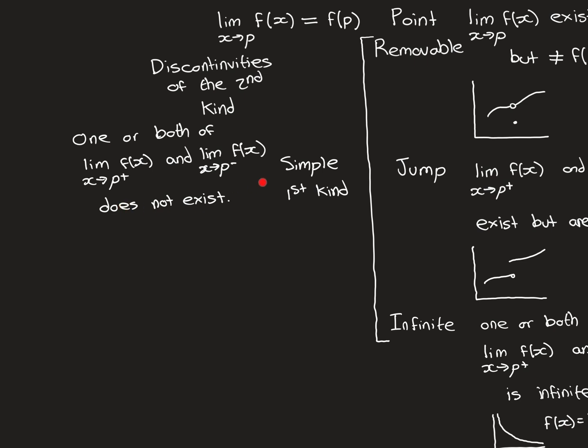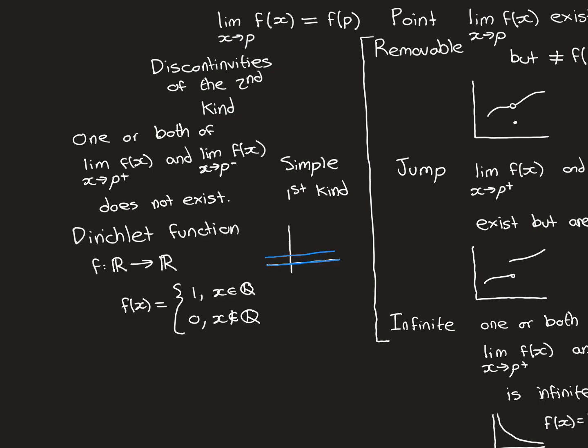For a discontinuity of the second kind, one or both of the right and left-hand limits as x approaches P does not exist. So from at least one side, the function is not approaching anything at all. A famous example is a function that has discontinuities of the second kind everywhere on its domain, the entire real line.